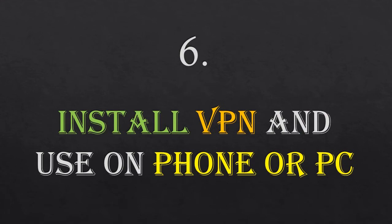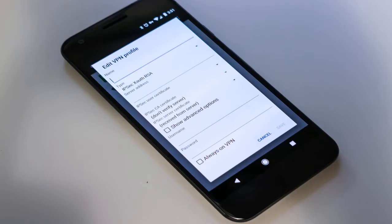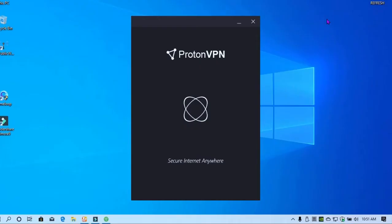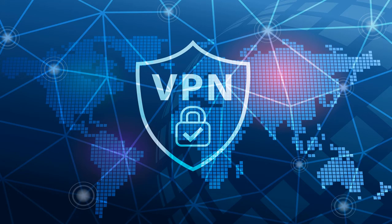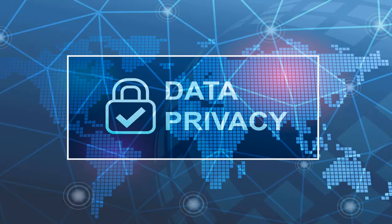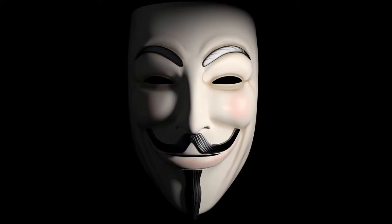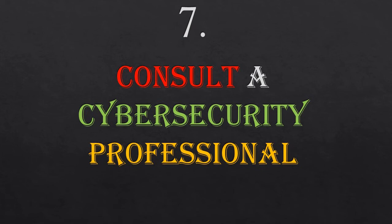Number six: install a VPN on your phone or PC. What a VPN does is protect you on the internet so that the data sent to the internet is encrypted, and you become anonymous — therefore hackers won't get access to you.